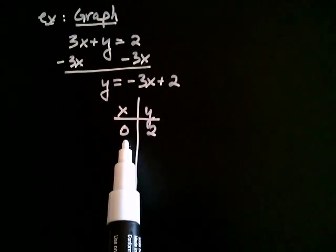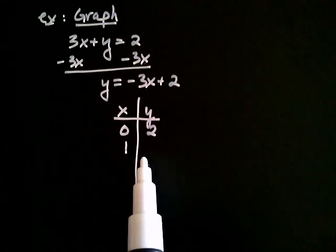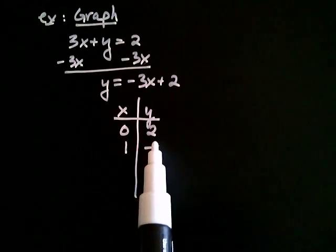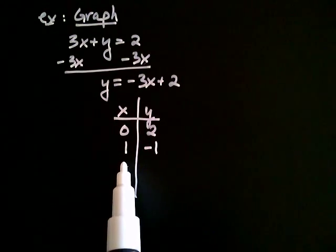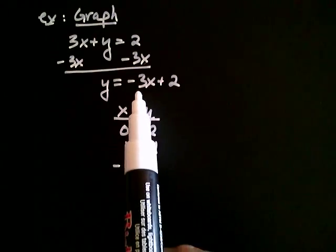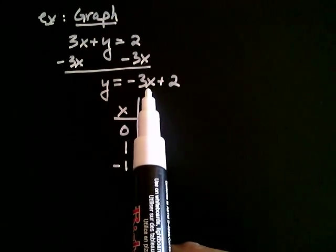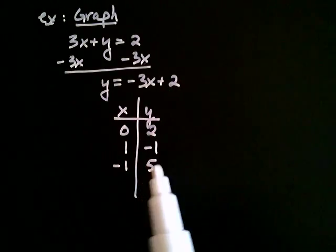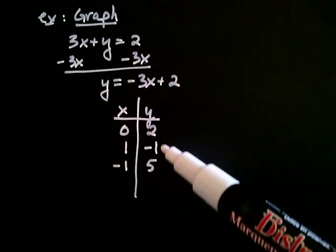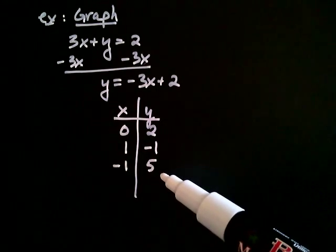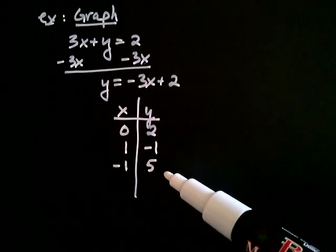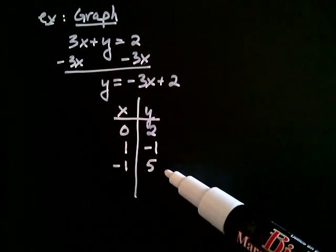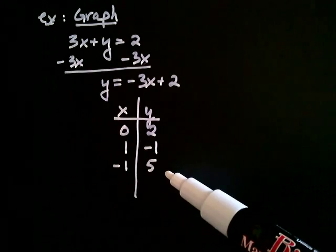How about I choose x to be one? If x is one, -3 times one is -3, plus two is -1. And likewise, how about x being -1? Then -3 times -1 is positive three, plus two is five. Now I have three ordered pairs. Three is a good number of ordered pairs to choose for graphing. It turns out you only need two ordered pairs to graph a line, but a third ordered pair serves as a check on your work.